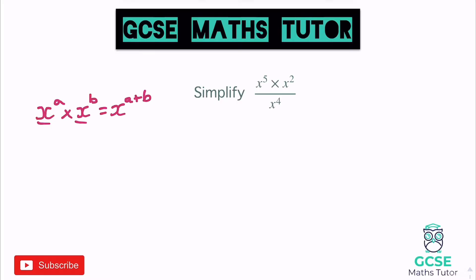We can also have a divide. So x to the power of a divided by x to the power of b — in this case you subtract them, you do the opposite, and that becomes x to the power of a minus b. We're applying these rules only when the bases are the same, so we subtract the powers when we're dividing.